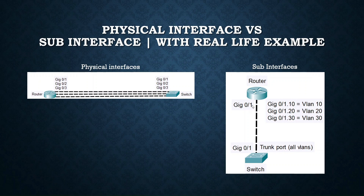I can now specify nearly as many subinterfaces as I would like on this one physical port. The exact number of subinterfaces you can configure on one physical interface varies depending on the platform. That's where it is very good to have subinterfaces — you don't have to use up all your physical ports, and you can specify a whole lot of VLANs on just one physical interface. That's how subinterfaces and physical interfaces differ from each other.